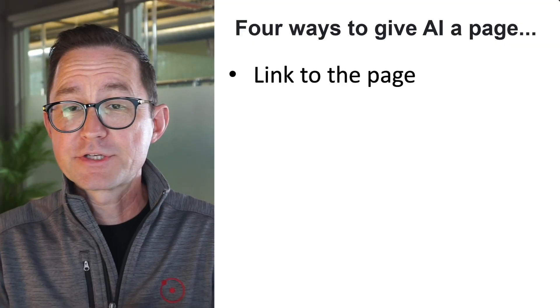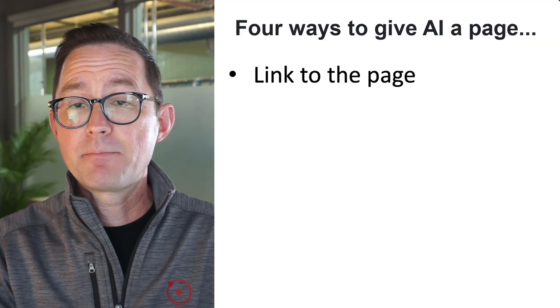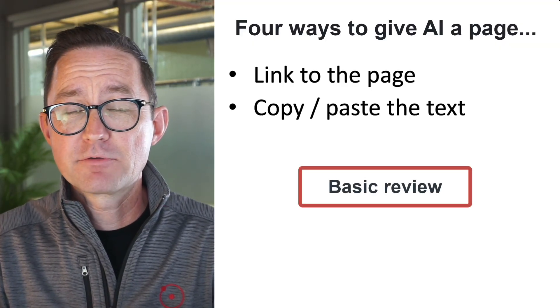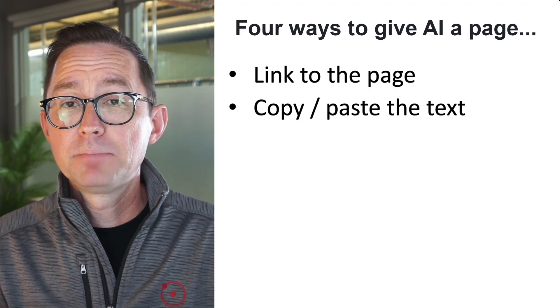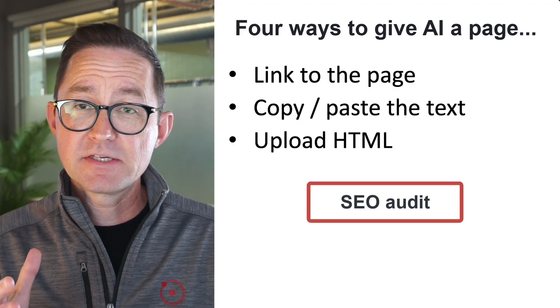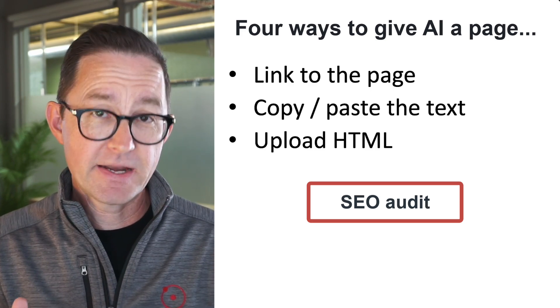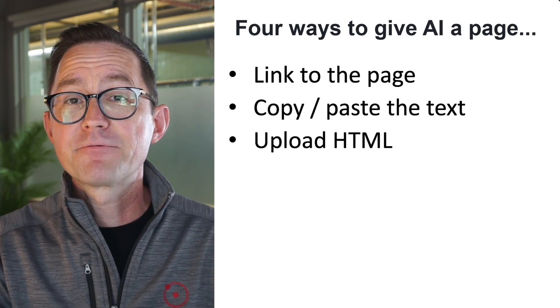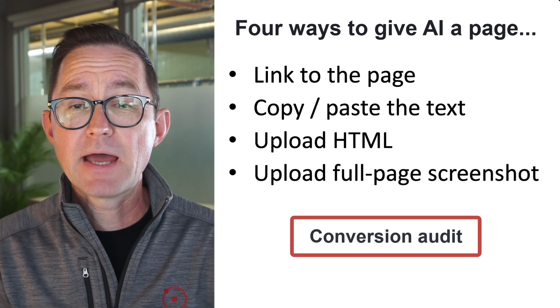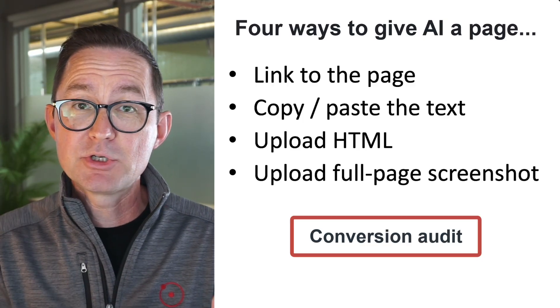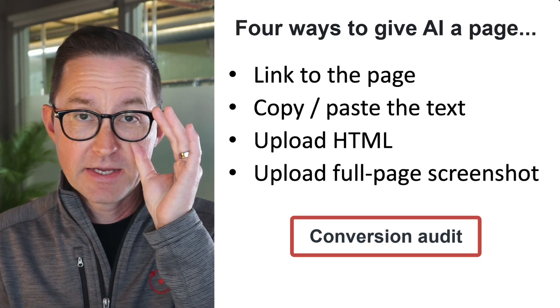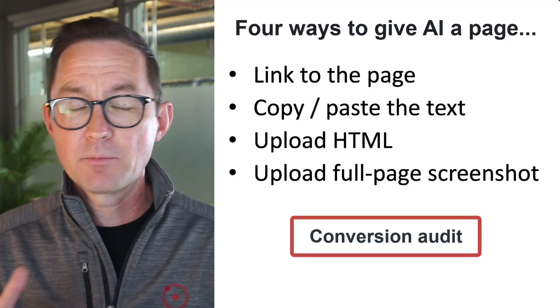I'm going to give it that web page. There are really four ways you can give AI a web page: you can give it the link, or copy and paste in the text — that's fine for a basic review. If you're doing SEO audits, you probably want to upload an HTML file, because then it can see the meta description and the title tag, which are not actually in the text of the page. But for anything related to conversion and engagement, I want to give it a full-page screenshot, because then it can see the images, look closely at the page, and evaluate what's there and what's not there.